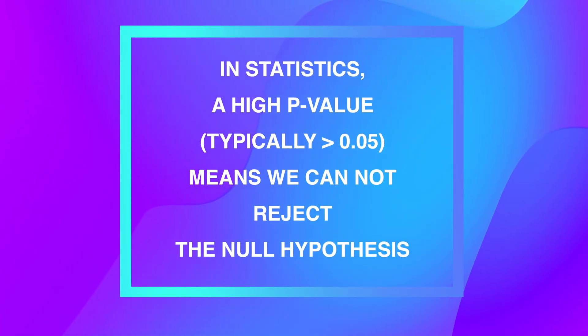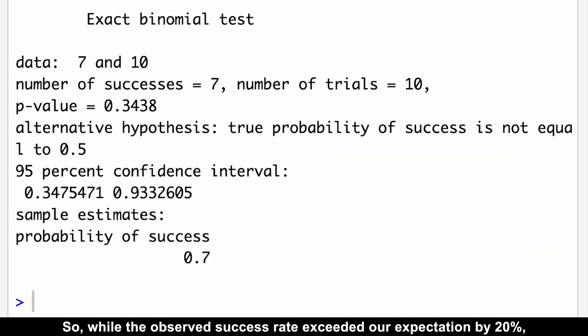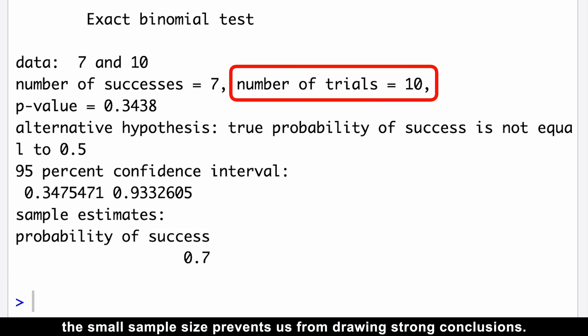In statistics, a high p-value, typically above 0.05, means we cannot reject the null hypothesis. So while the observed success rate exceeded our expectations by 20%, this small sample size prevents us from drawing strong conclusions.